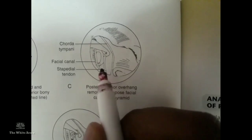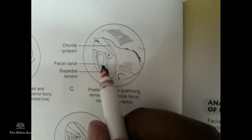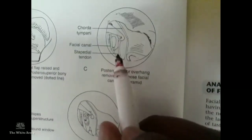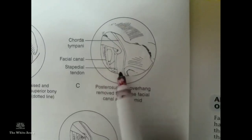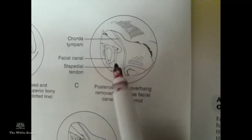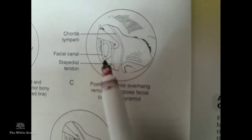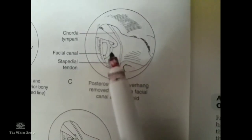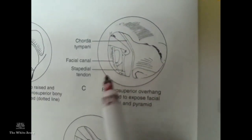After further dissection, the incus, incudostapedial joint, stapes crura, and stapedial foot plate become clearly visible. The stapes superstructure is then removed: first, the stapedial tendon is cut to release fixity; then the incudostapedial joint is separated; mobility of the incus and malleus is confirmed; and finally the superstructure is removed by cutting through the two crura.